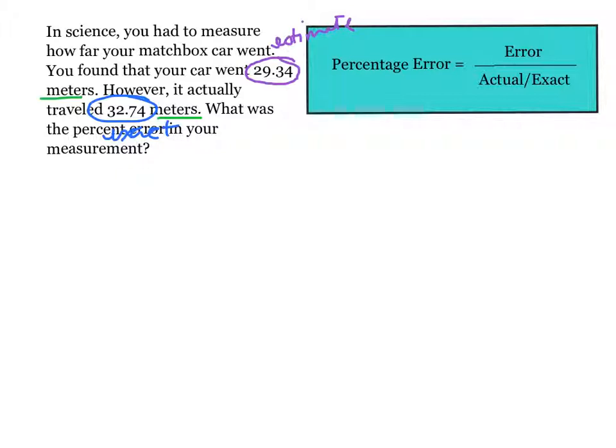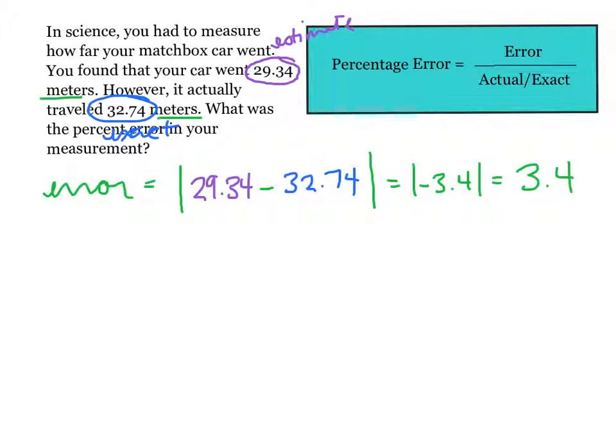However, if the labels are unequal, you have to make them the same. Let's say you guessed four apples and there were five oranges. You can't subtract apples and oranges. You have to make sure your labels are the same. To find our error, it's the absolute value of the estimate of 29.34 minus the exact of 32.74. You get the absolute value of negative 3.4. But absolute value is always positive, so in this case, our error is simply 3.4 meters.